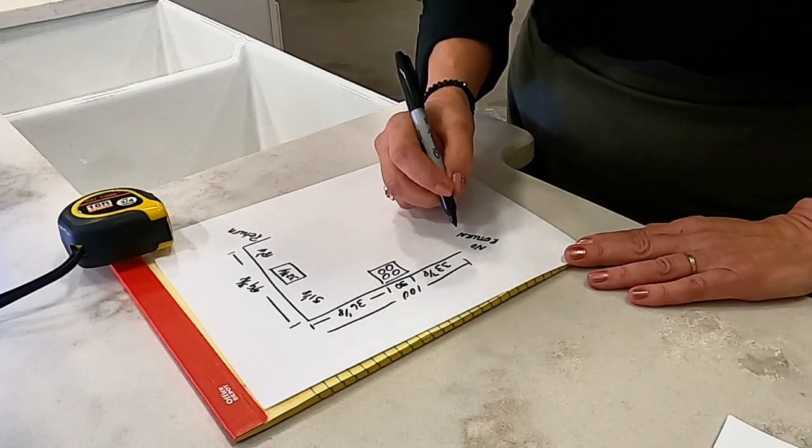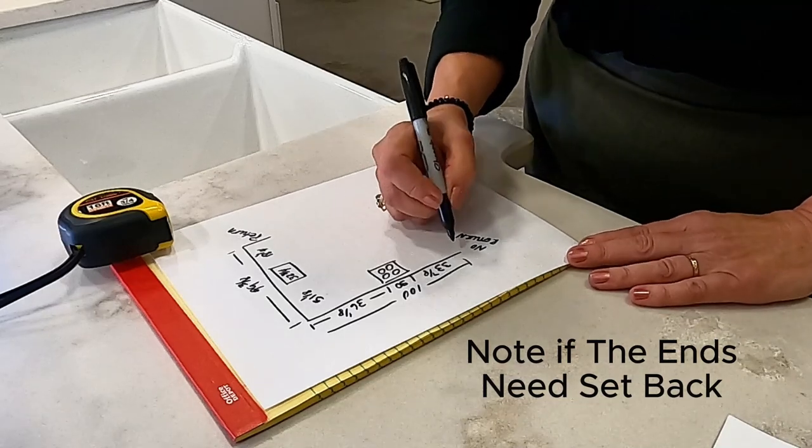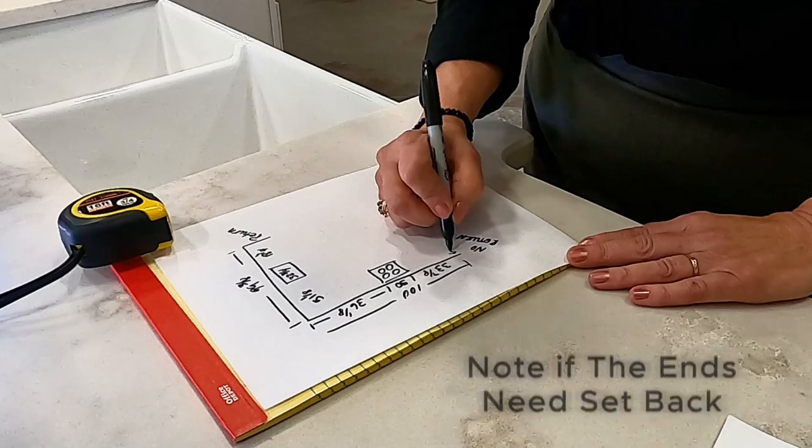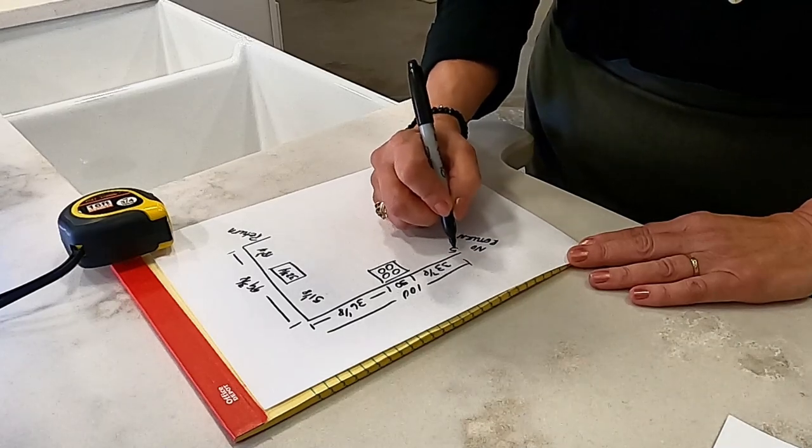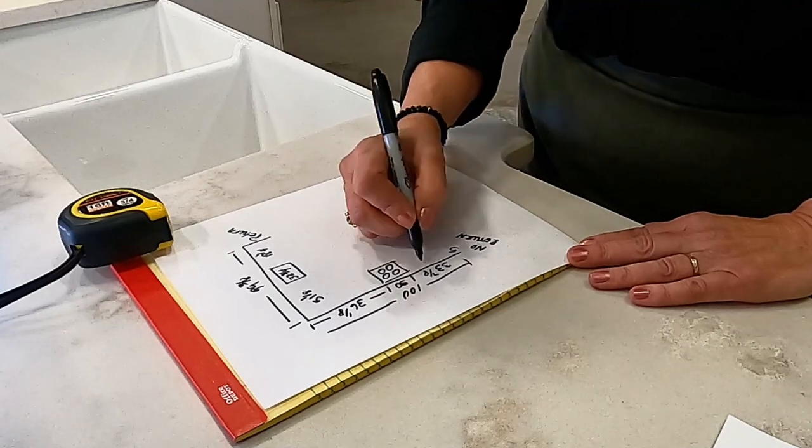Now, if you need the cabinets to stay back a certain amount on your wall, maybe you want to back five inches or so, just write that down and I will make sure that I stay back far enough from what you've written down there.